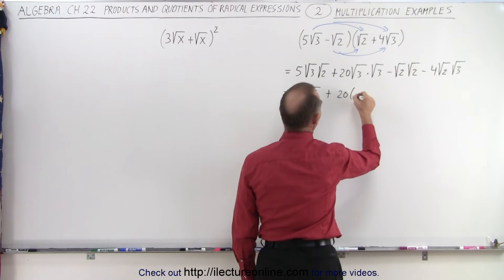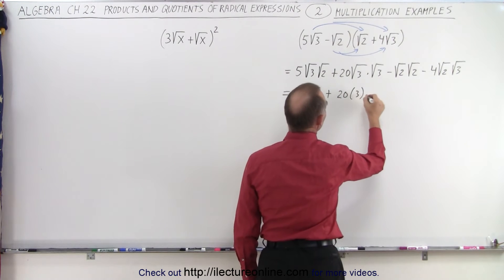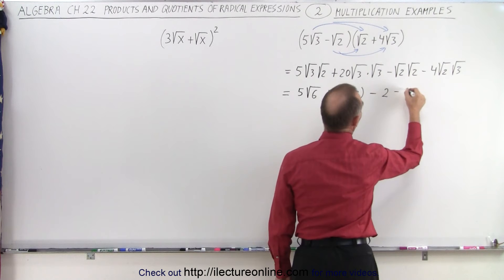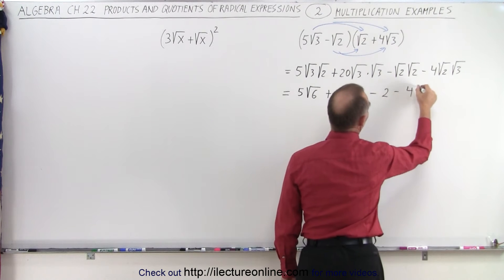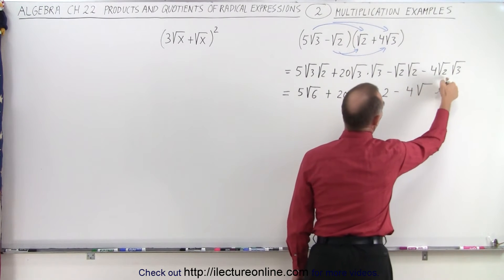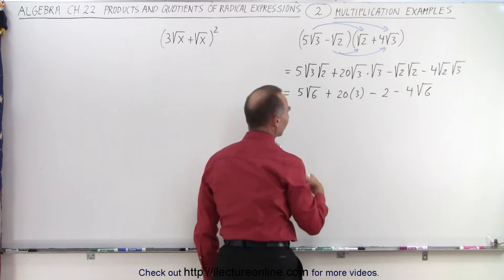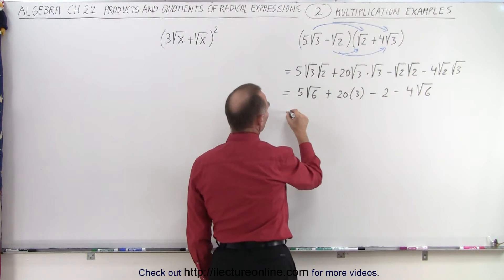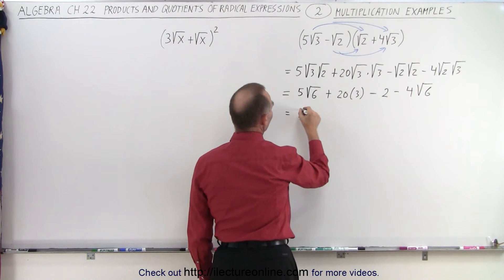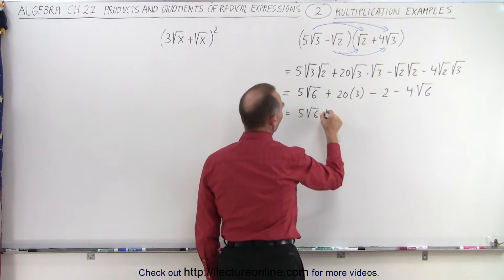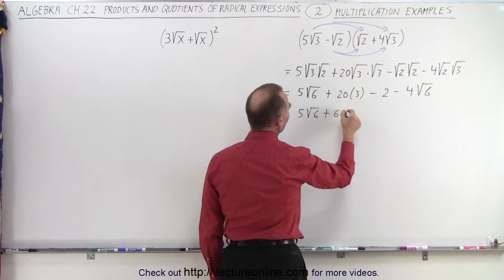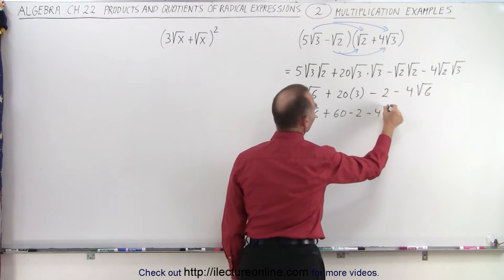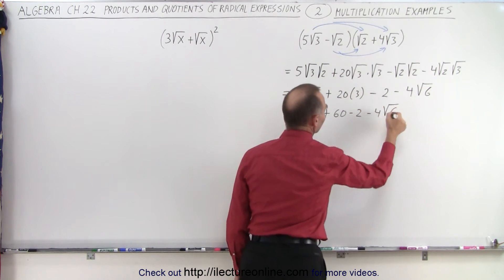So we get 20 times three, minus this would be two, and minus four times the square root of two times three, which is six. Now, simplifying this a little bit more, this gives us five times the square root of six, plus 60, minus two, minus four times the square root of six.